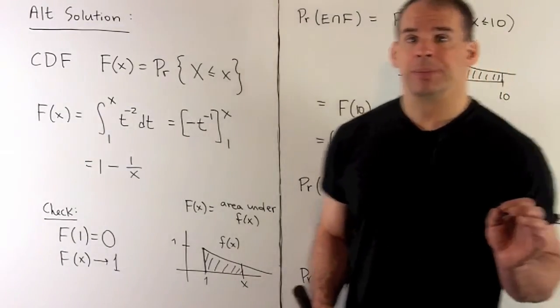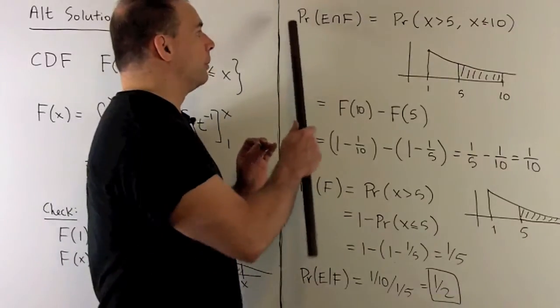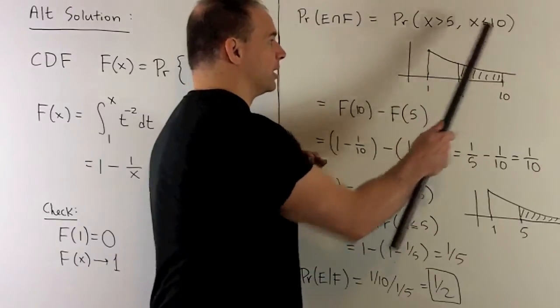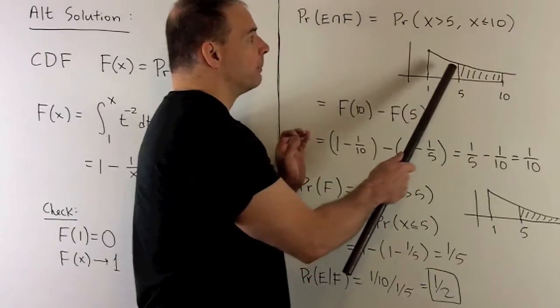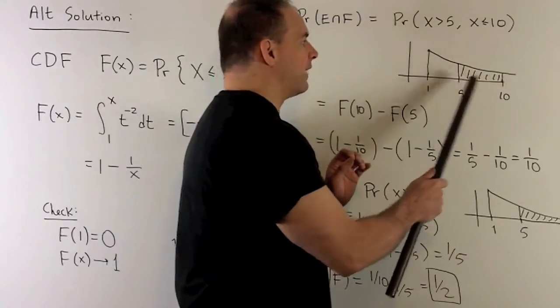Now, how do we use it? So, this is just drawing pictures. First, the probability of my intersection. It's gonna be a probability of x greater than 5, x less than or equal to 10. So we draw our density function, and we're concerned with the area between 5 and 10.